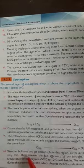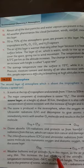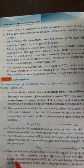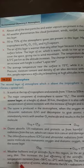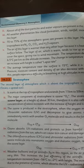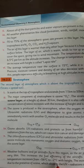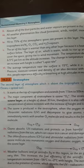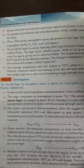Weather balloons and jet aircraft fly in the stratosphere. The air present in this layer is very thin — mostly ozone is found here — which causes higher fuel consumption. The temperature range in stratosphere is from minus 56 to minus 2 degrees centigrade — meaning temperature increases with altitude. This is called positive lapse rate: when temperature increases with height or altitude. The increase in temperature is due to the presence of ozone which absorbs the ultraviolet radiation of the sun.